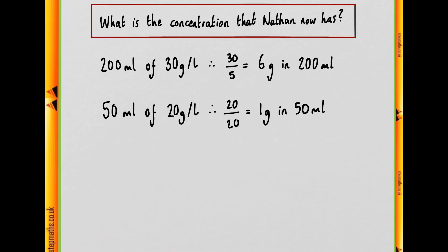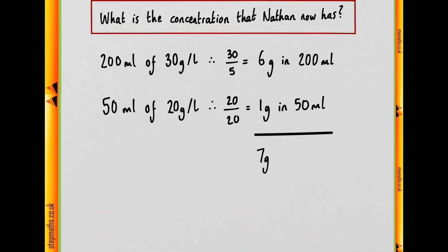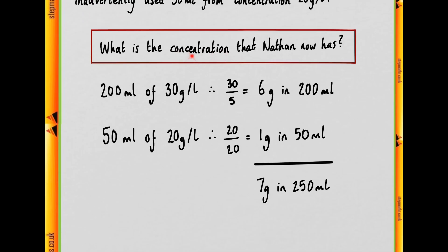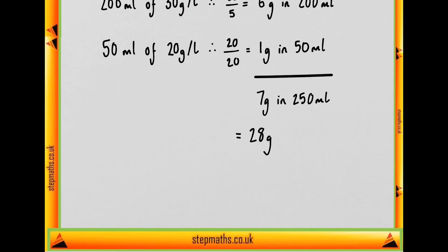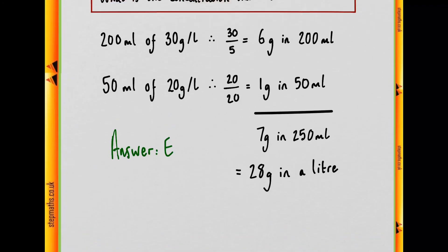So how much do we have in total? So we have 7 grams in 250 ml. So this is what we have. Now this is in a concentration. We need our concentration in grams per litre. So we can multiply both by 4. 28 grams in a litre. Therefore our concentration is 28 grams per litre, which is option E.